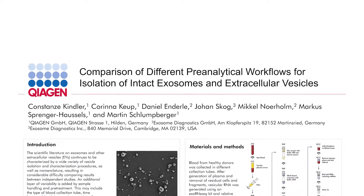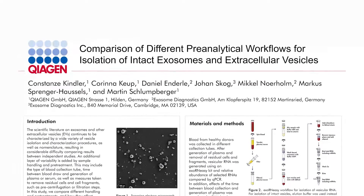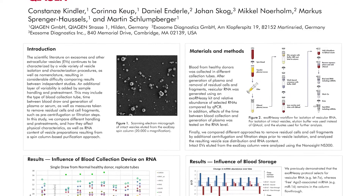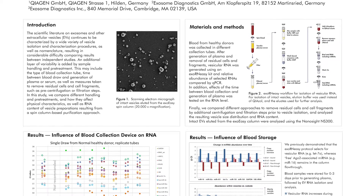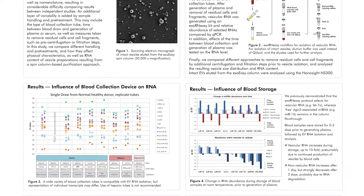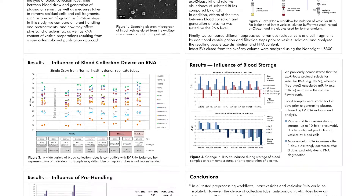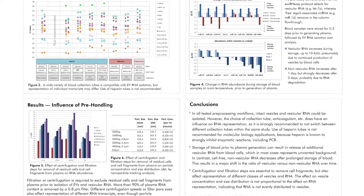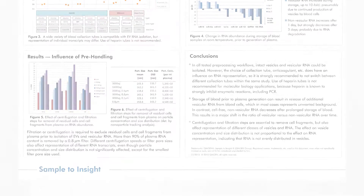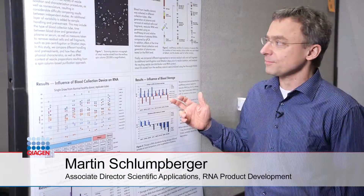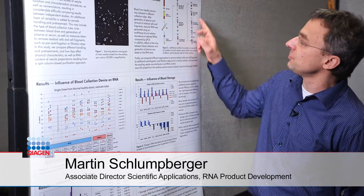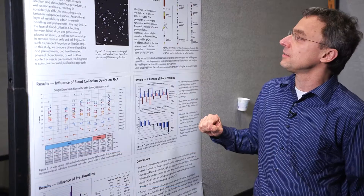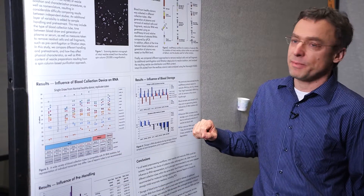For this study, we were interested in how different handling or preanalytical workflows for plasma and serum samples affect isolated vesicles and the RNA you get from the vesicles. The method we're using to get to the vesicles and the RNA is spin column based.